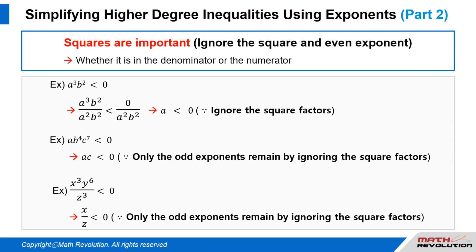If x cubed times y to the power of 6 over z cubed is less than zero, then this can be written as x over z is less than zero because we can ignore squares and only odd exponents remain when there is a square in the denominator or the numerator.